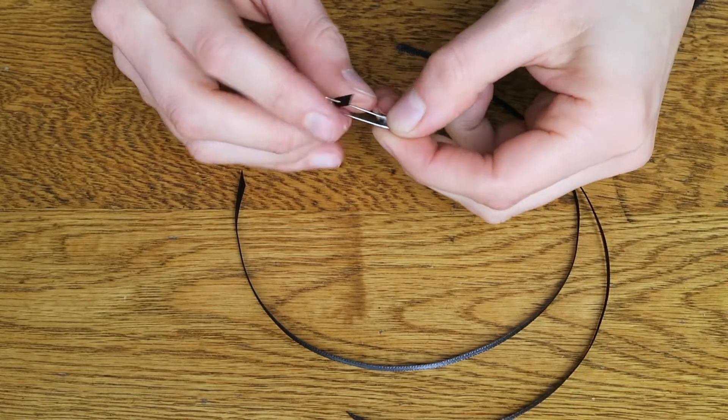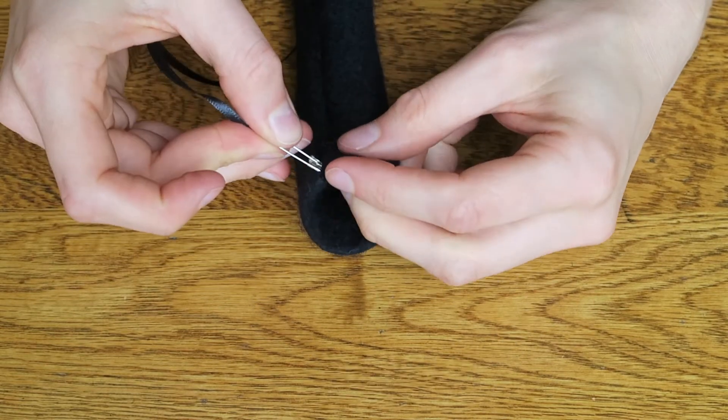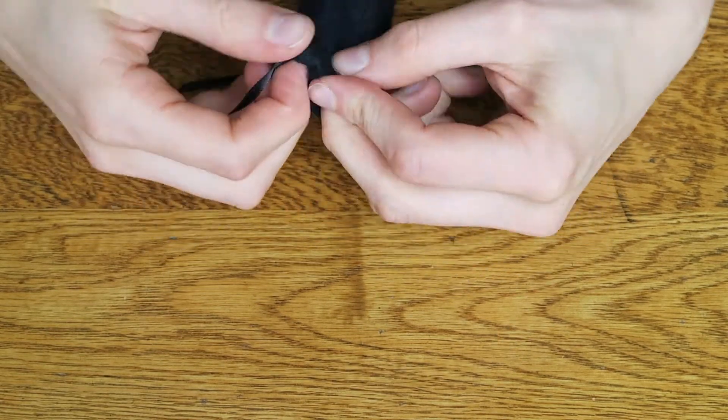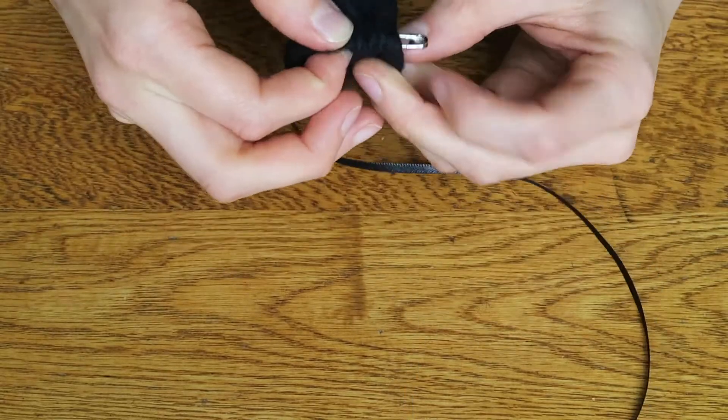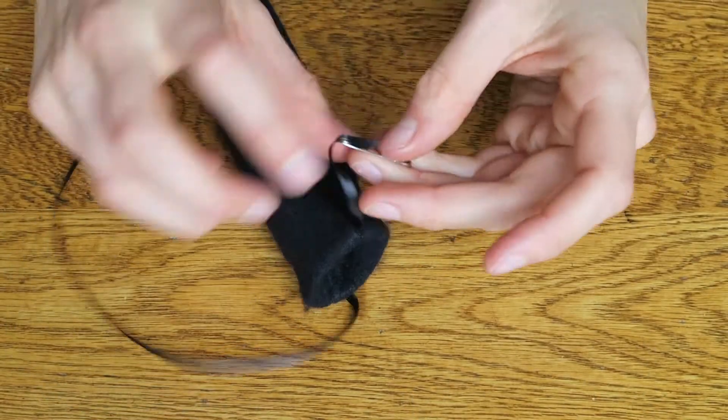Cut two lengths of ribbon or cord, attach a safety pin to one end and feed it through one of the openings. When you get to the other side, continue feeding the ribbon or cord through to where you started.